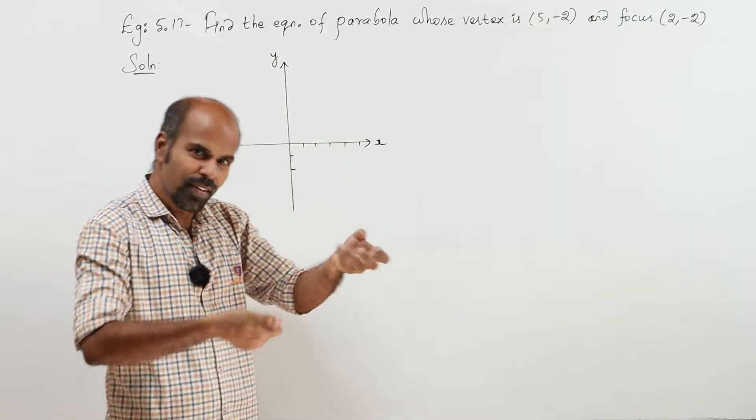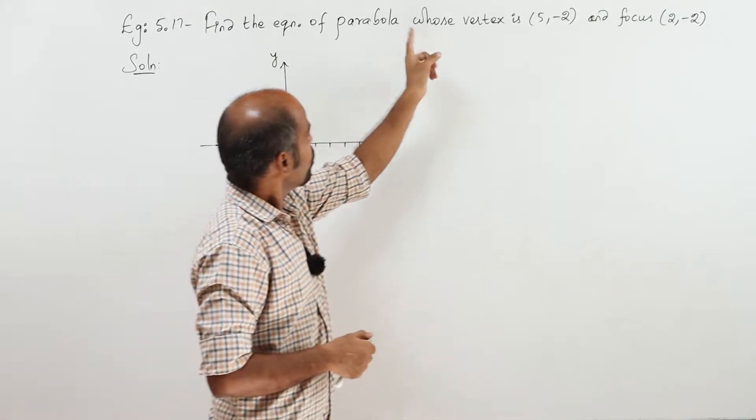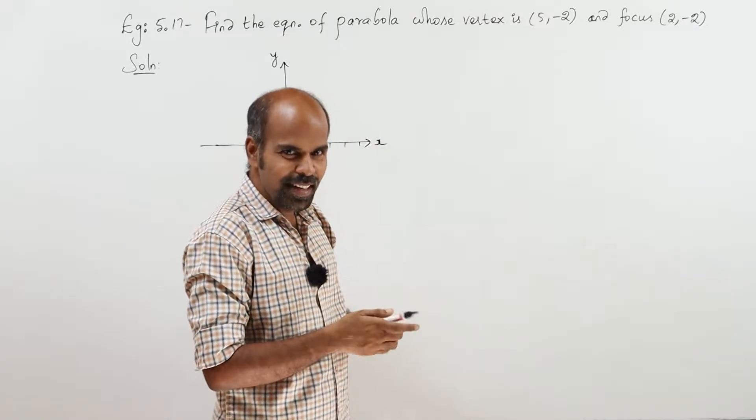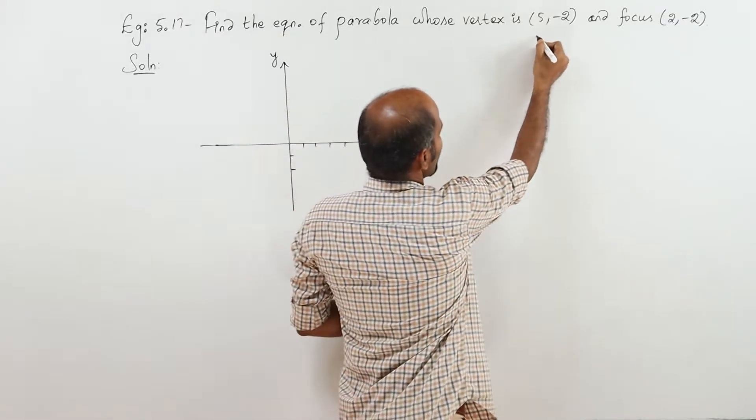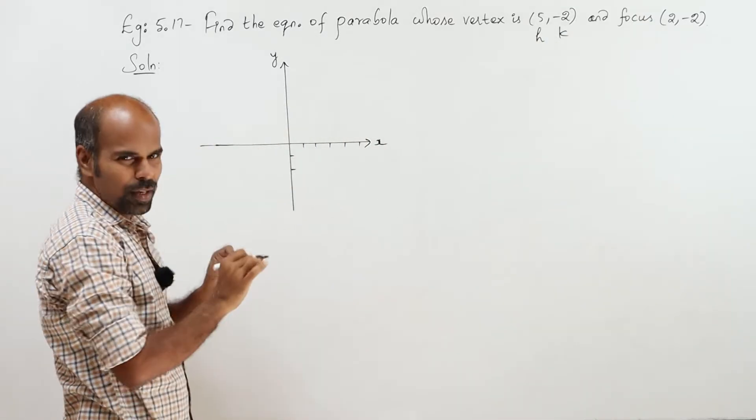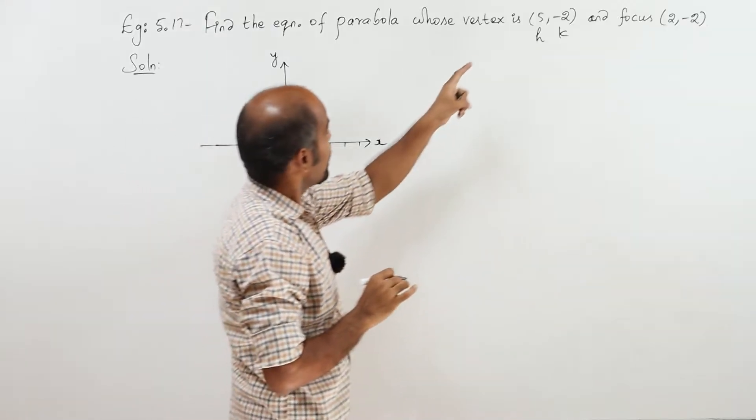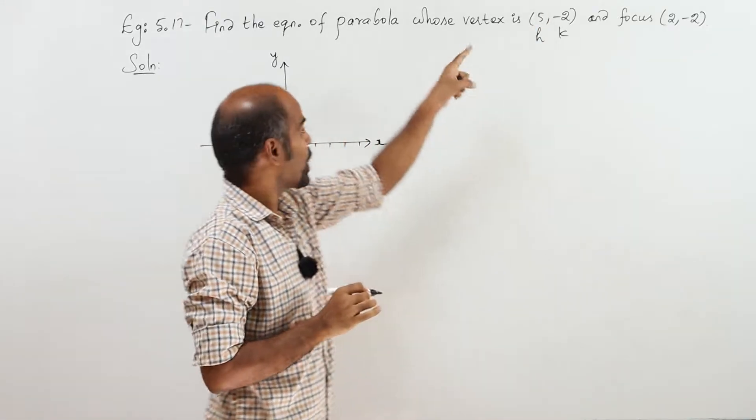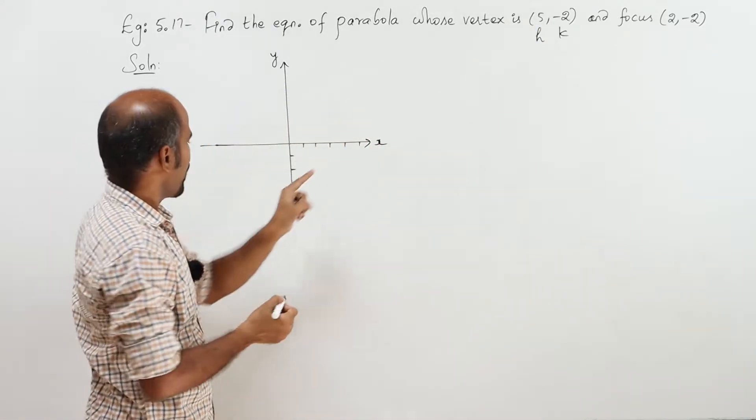h, k, yengaradu vertex, further a kandu uđikonu. Whose vertex? Vertex naath h, k. h is 5, k is -2. Question liye direct h, k kundu uđikonu. Vertex is 5, minus 2. X la 5, Y la minus 2.